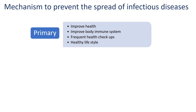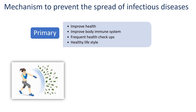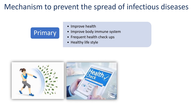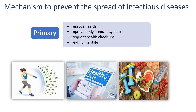There are three primary mechanisms for preventing the spread of infectious disease: primary, secondary, and tertiary. The primary mechanism emphasizes personal health improvement — bolstering the immune system through proper nutrition, regular exercise, and adequate rest. Frequent health checkups help detect potential issues early, and maintaining good hygiene practices and avoiding risky behaviors plays a crucial role.